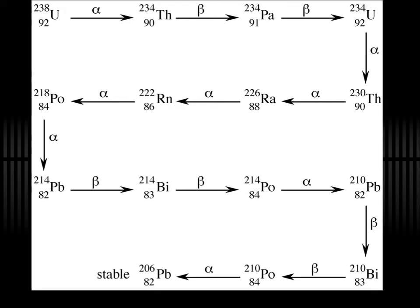Uranium-238 ultimately forms lead-206, which is a stable isotope. Much of the lead in our planet was once uranium that has decayed. The half-lives along this chain vary enormously — some steps take just a few hours, while the first thorium decay takes about 10 million years. Some steps have half-lives of billions of years. As the Earth is four billion years old, any remaining uranium-238 is simply the undecayed portion of what was originally there.